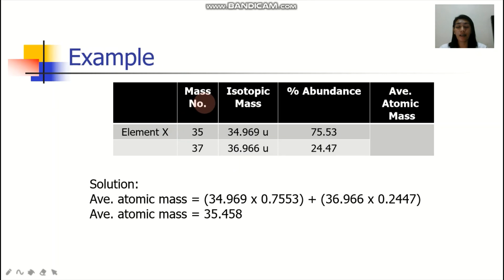Example, I have here element X. Element X has a mass number of 35 and mass number 37. Provided there are the isotopic masses and their percentage abundance. The isotopic mass of the first isotope is 34.969. And then, yung second one is 36.966. To get the average atomic mass, you simply multiply that to the percentage abundance. Bakit naging 0.7553? So, this one is percentage. Kinabert ka na siya into its decimal.